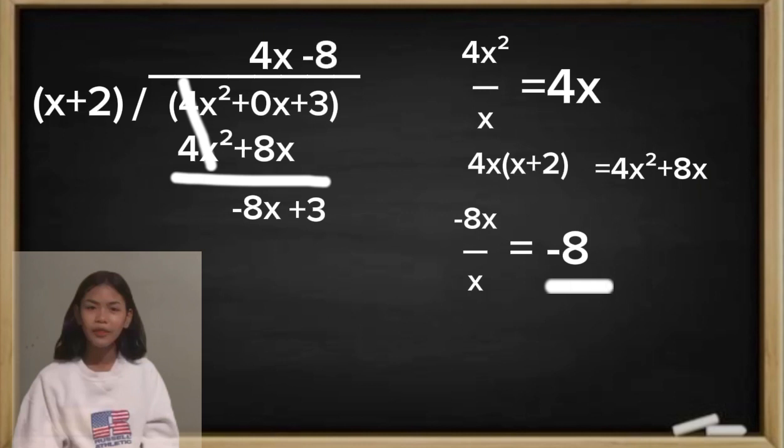And then negative 8 multiplied by the divisor. So that will become negative 8 multiplied by x plus 2. So that will become negative 8x minus 16.